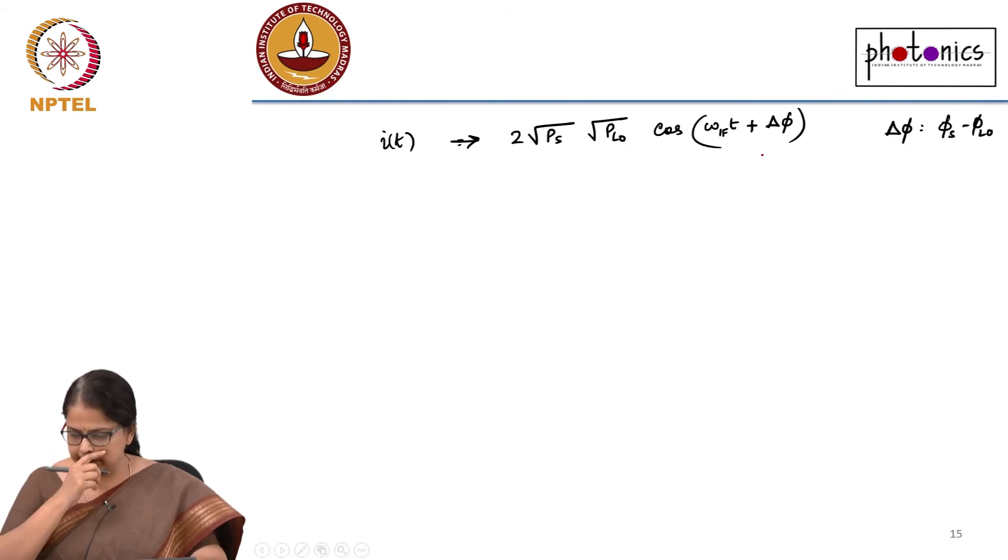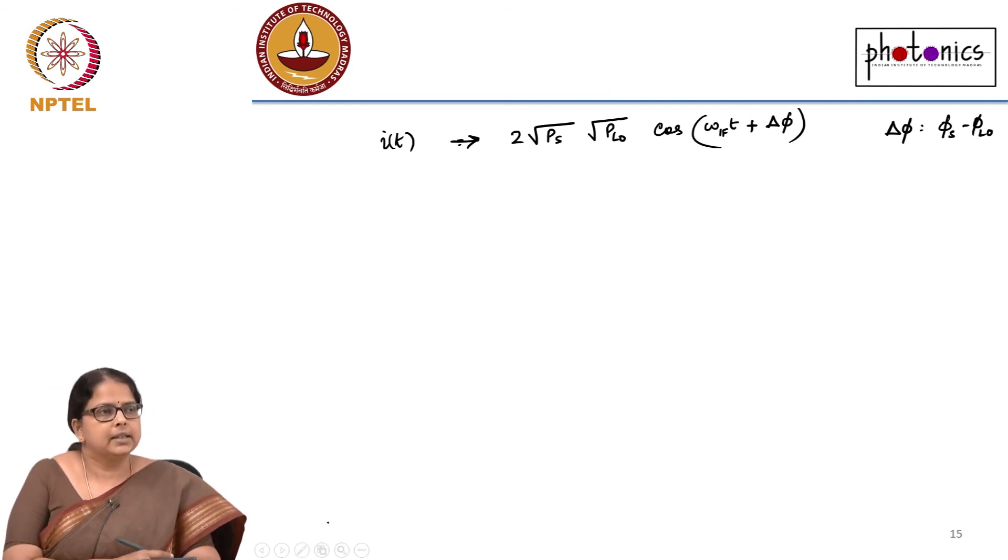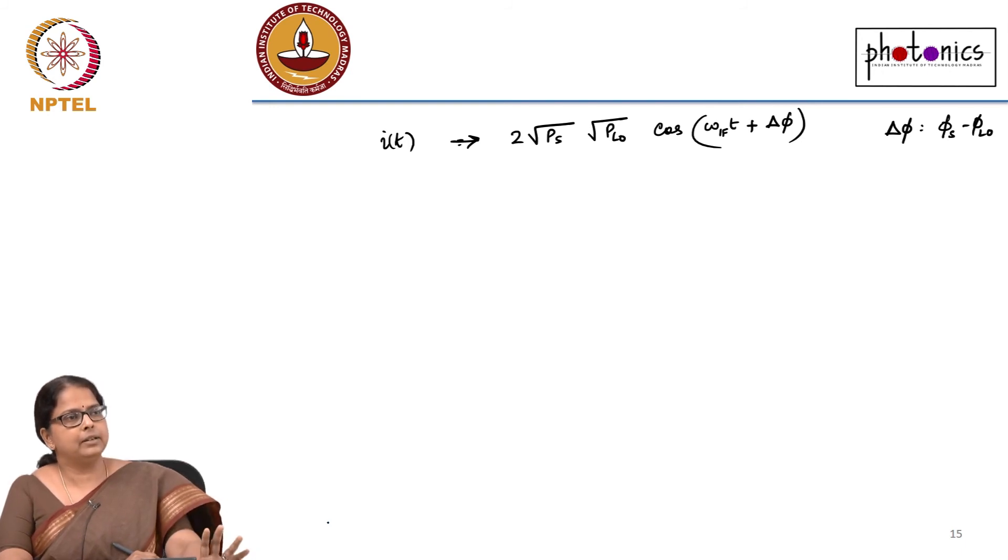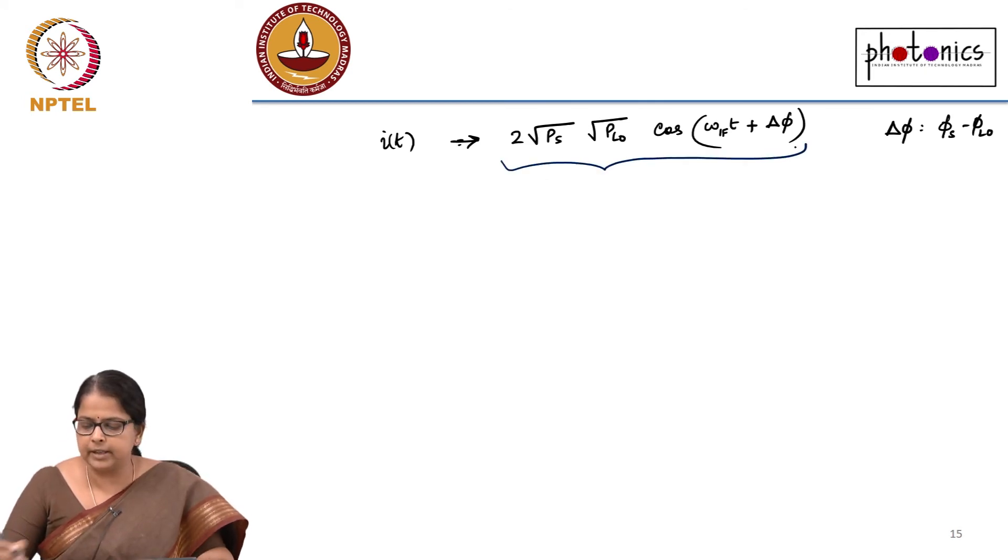This is my signal and what we want to check is, why did we start using a coherent receiver or a heterodyne receiver? I started using it to increase my, is it to increase my power? I wanted to operate in the shot noise limit. Is that happening? Intuitively that is happening, but I can prove it only after calculating the SNR. The next step is to actually calculate the SNR. But before we do the SNR, this is where the distinction between the two types of coherent detection happens.